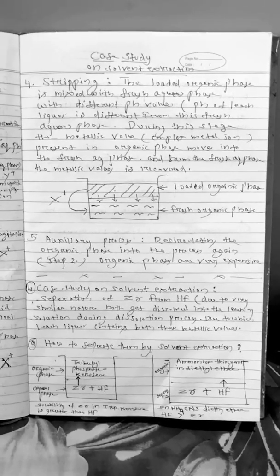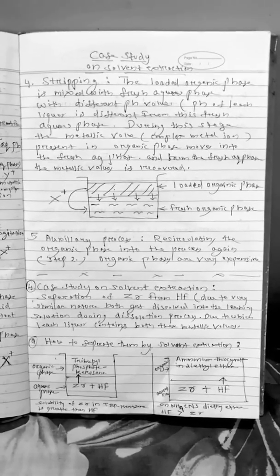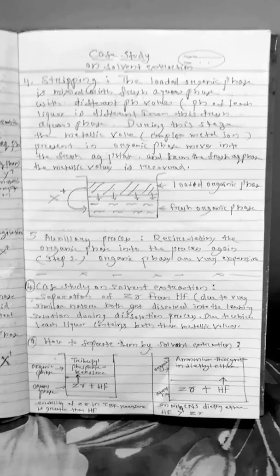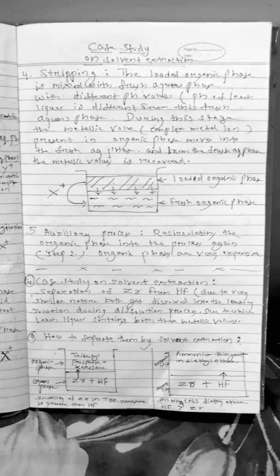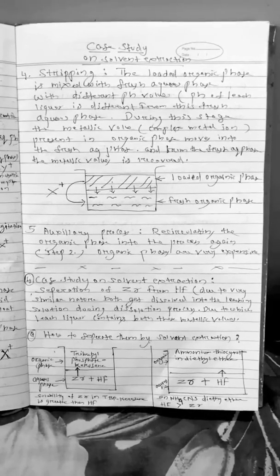The last one is the auxiliary process where we recirculate this organic phase again to step number two because this organic phase or organic solvents are very expensive, we cannot discard it like that.